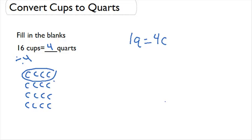So here's a group here, and then a second group, and a third group, and down at the bottom here we have a fourth group. Each of these groups has four cups in it, and since four cups is equal to one quart, we know that we have four quarts since we have four groups.